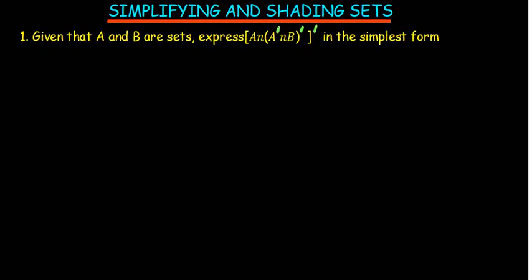We are going to simplify and also get to shared sets. Given that A and B are sets, express A intersection A complement intersection B, complement, in the simplest form. To do this, we need to apply all the rules of sets: the distributive law, associative law, commutative law, and De Morgan's law — very important laws.